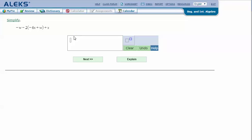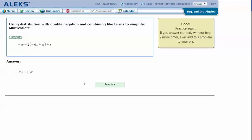In my ALEKS screen, type in the answer that I got in my notes: negative 3w plus 13x, and click next. And it says that I got the correct answer. Thanks for watching!